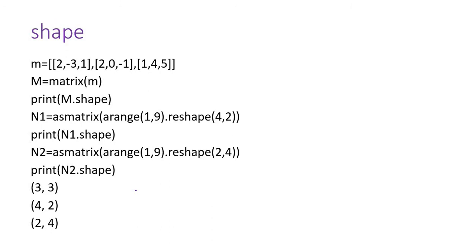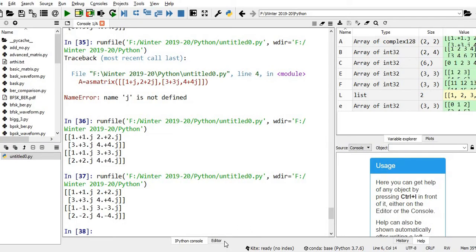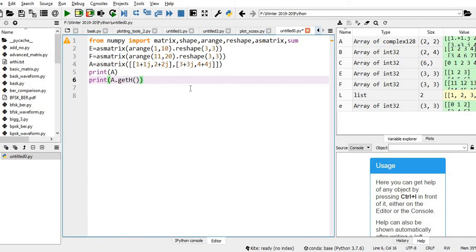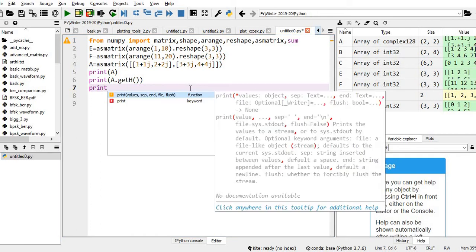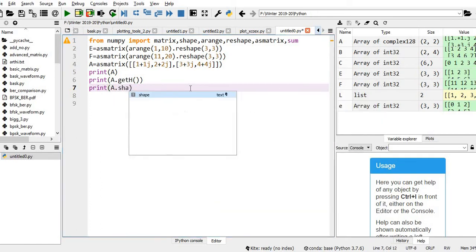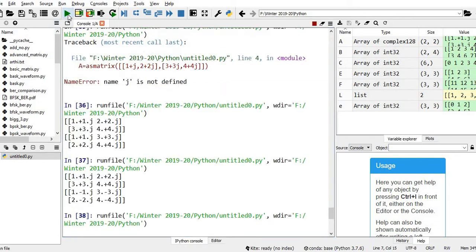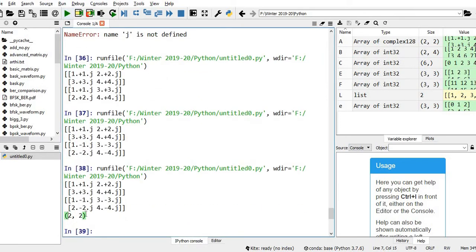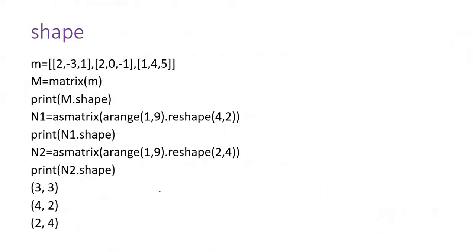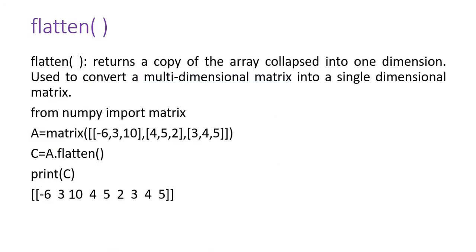The shape attribute tells you the number of rows and columns of a matrix. For example, let me print A dot shape. You can see it is basically a 2 by 2 matrix — it has 2 rows and 2 columns.